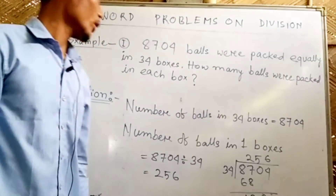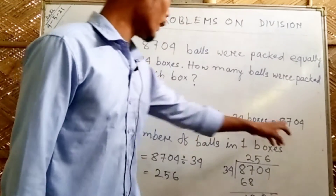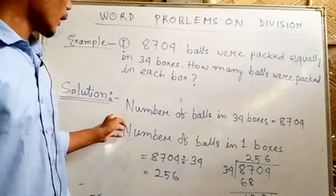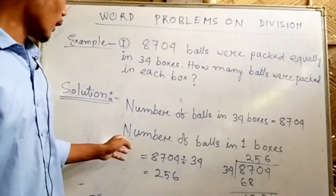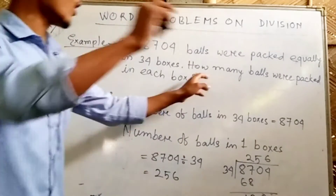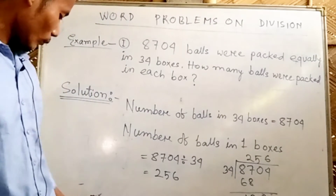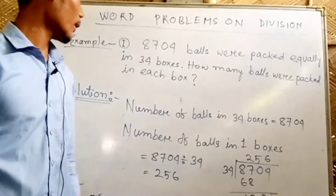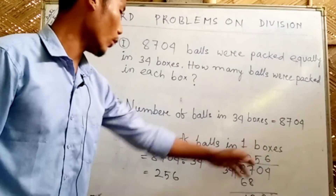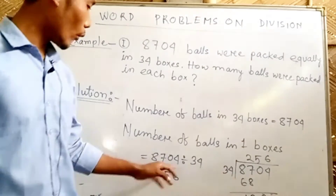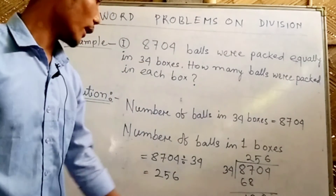We want to find how many balls were packed in each box. The total number of balls is 8700. The number of boxes is 34. We will divide the total number of balls by the number of boxes to find how many balls are in each box.